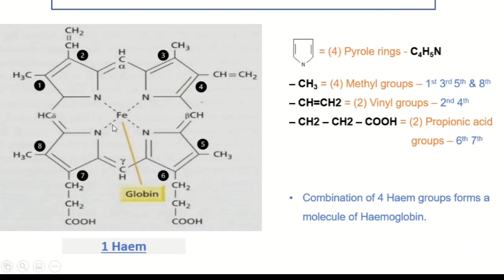Last but not least, there is an iron atom at the center of the heme structure, which plays a major and vital role. This iron atom is the one that produces the bright red color of the blood. This constitutes a single heme group. There are four such heme groups in total to form one hemoglobin molecule.